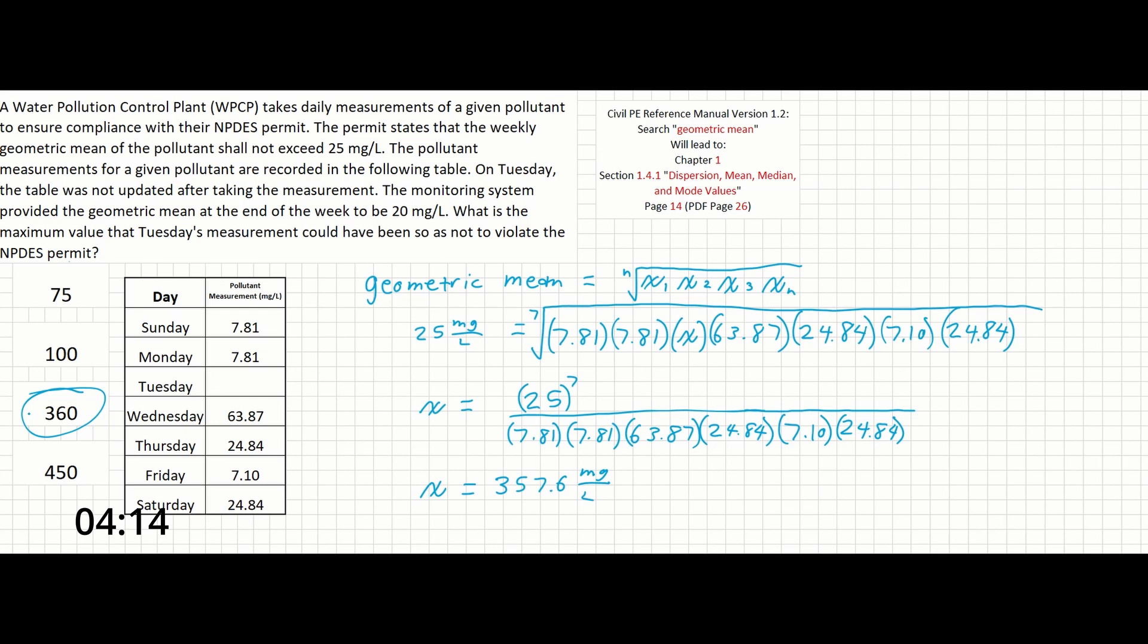This answer may seem high, but that is the point of the geometric mean - outlier values are less significant. Also, solving for a geometric mean of 20 incorrectly instead of 25 will give you a noticeably different answer. Avoid this trick by reading the problem carefully, and you will solve this problem correctly.